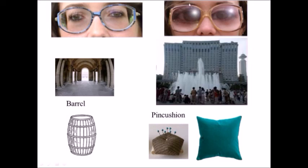On the other hand, this high hypermetrope person can see the image distorted like this. We call this a pincushion or cushion distortion and we call this a barrel distortion.